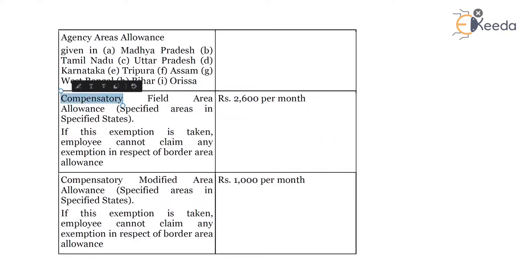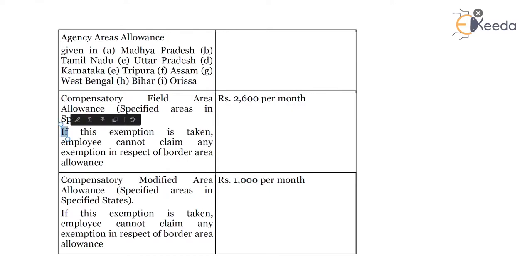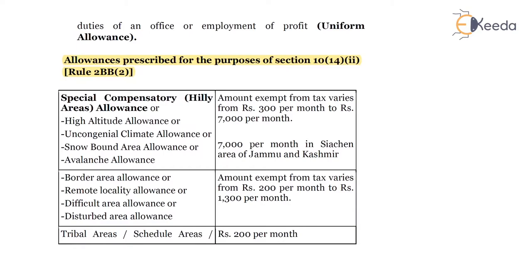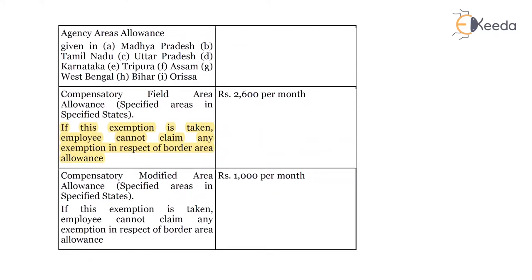Next is compensatory field area allowance for specified areas in specified states, where 2,600 per month is the exemption amount. There is a note: if this exemption is taken — the compensatory field area allowance — the employee cannot claim any exemption in respect of border area allowance. So either you take the border area allowance, which ranges from 200 to 1,300 per month, or you take the compensatory field area allowance — both cannot be taken simultaneously.